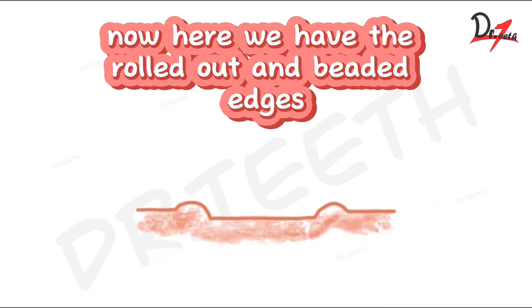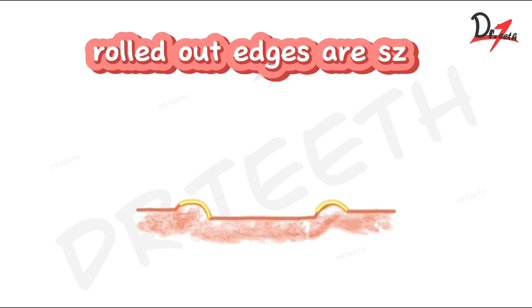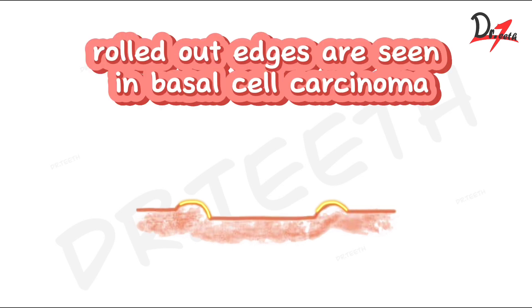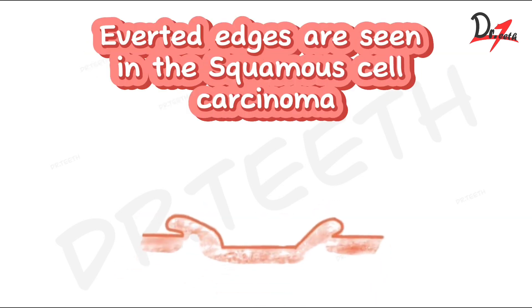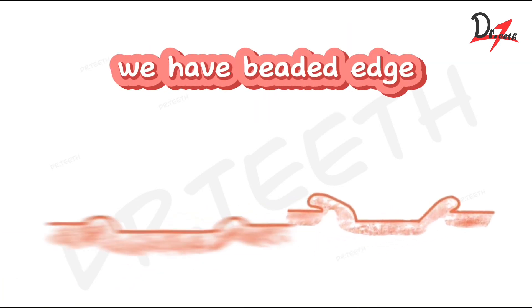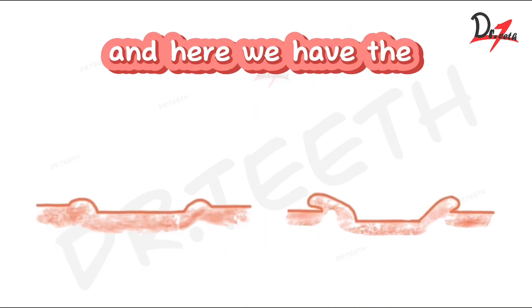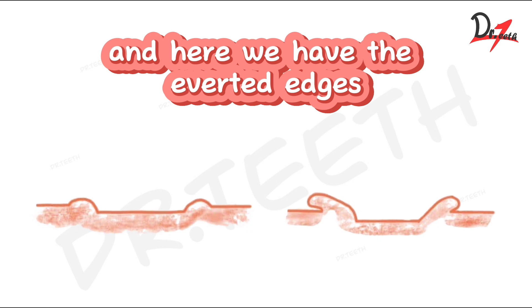Rolled out and beaded edges are seen in basal cell carcinoma, while averted edges are seen in squamous cell carcinoma. Here you can see the beaded edge, and here we have the averted edges.